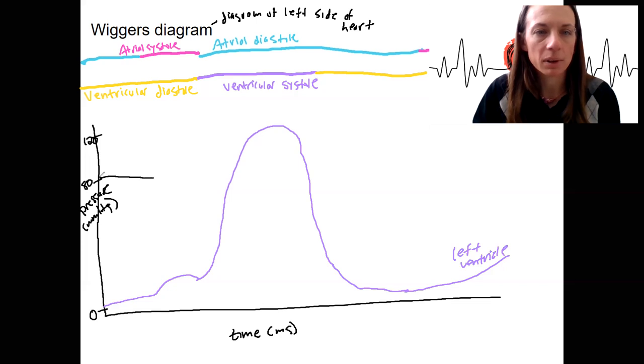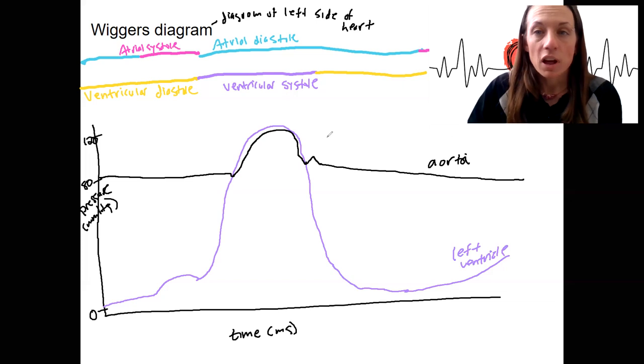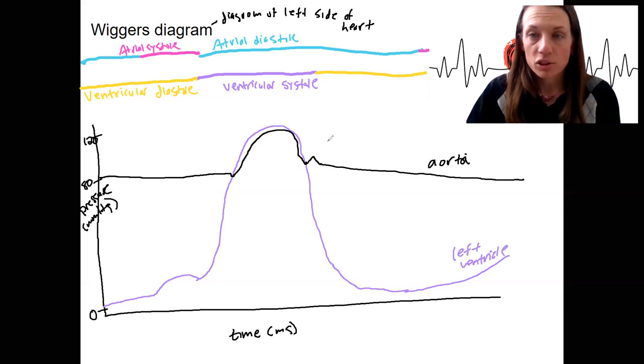So this is aorta. We're going to have a kind of a slow decrease here. And then we're going to have a kind of follow along the ventricular pressure. It's going to drop. It's going to be a little notch here. And then it's going to go down. This is aorta.